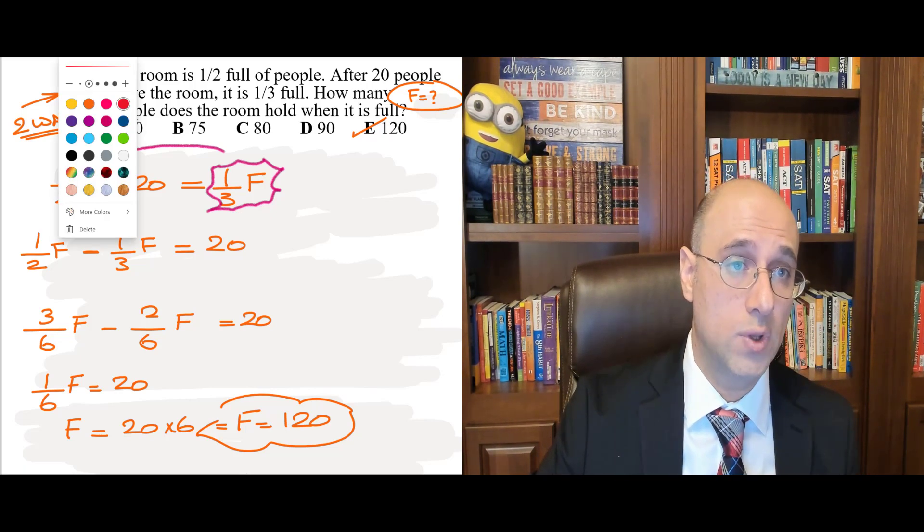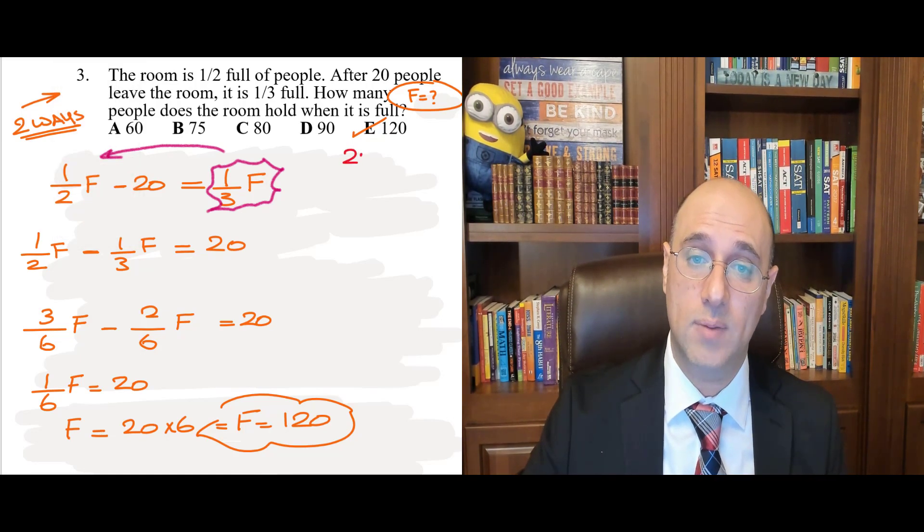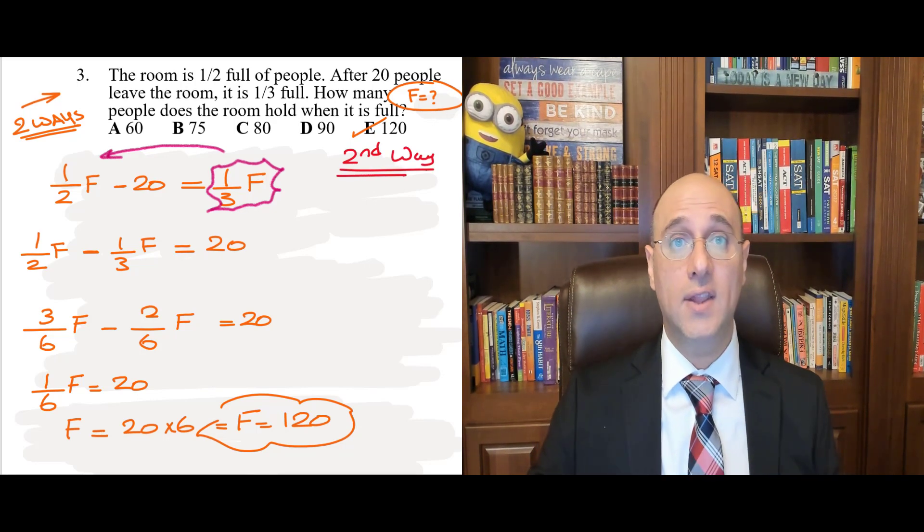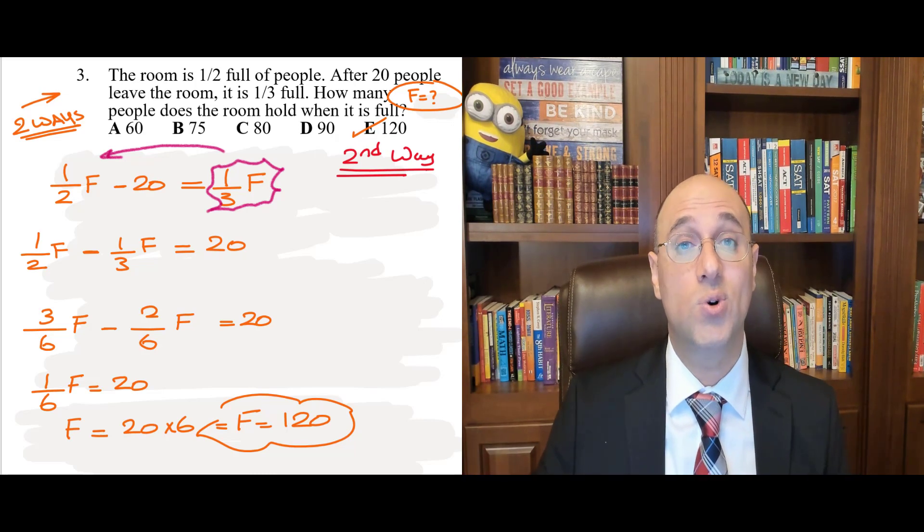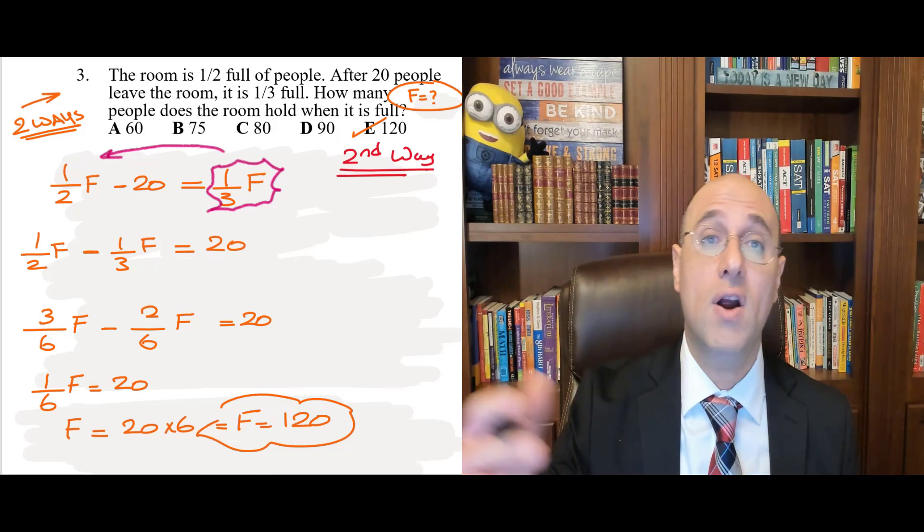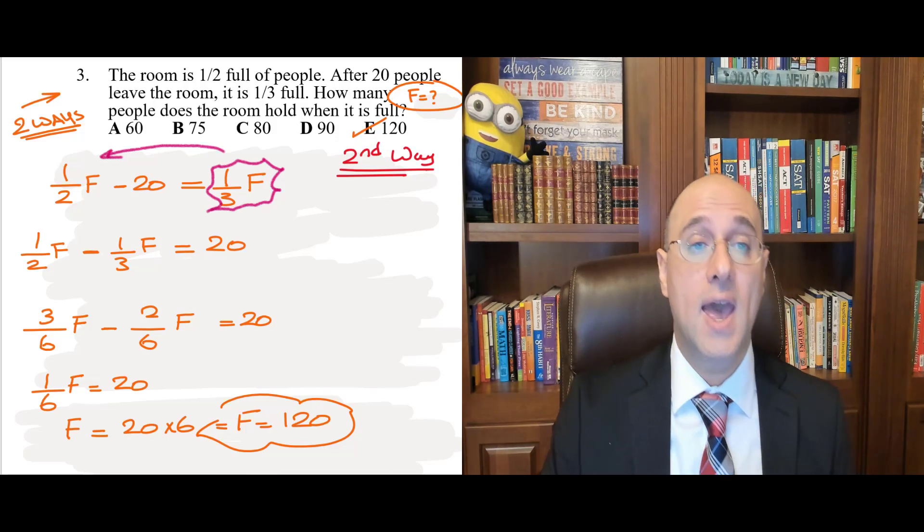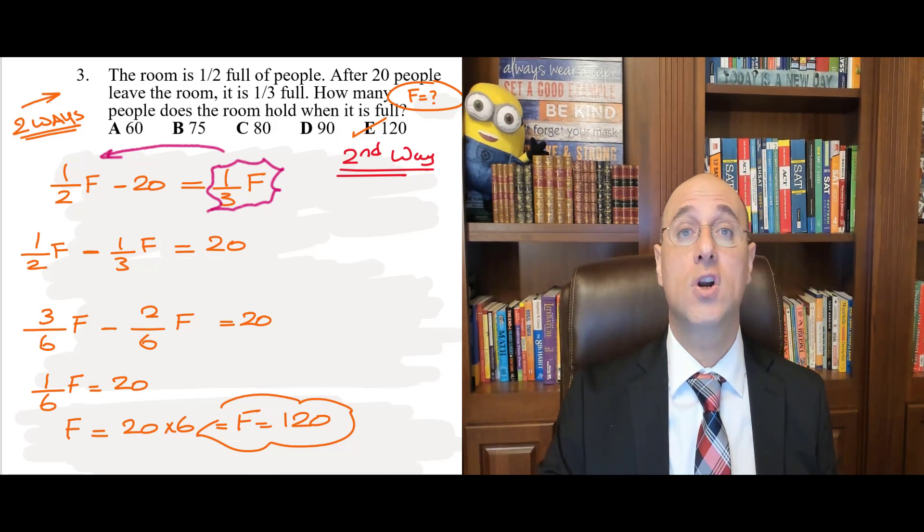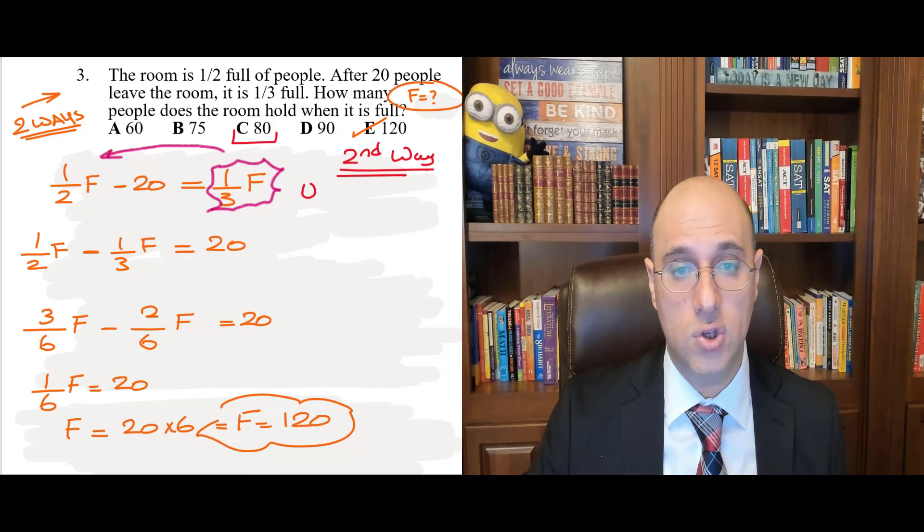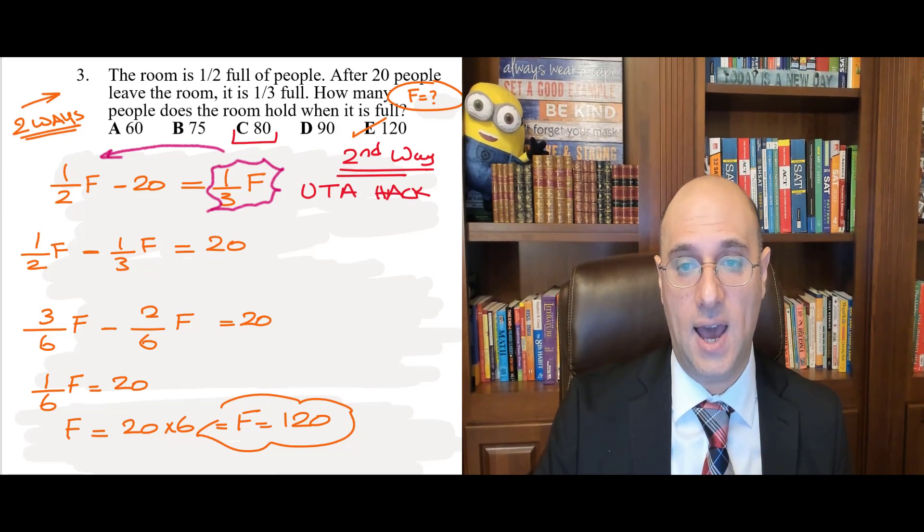Now, the second way is actually really simple and it's smart. So, let's take a look. How can we do it using the second way? Well, here's what I would do. Now, I already have answer choices. It's not like the test is asking you how many people does the room hold when it's full and then you have to calculate and actually type in your answer. There are answer choices to choose from. So, use those answer choices. And if you have no idea which answer choice to start trying with, always start with the one in the middle. So, this is what we call use the answers hack. U-T-A hack.